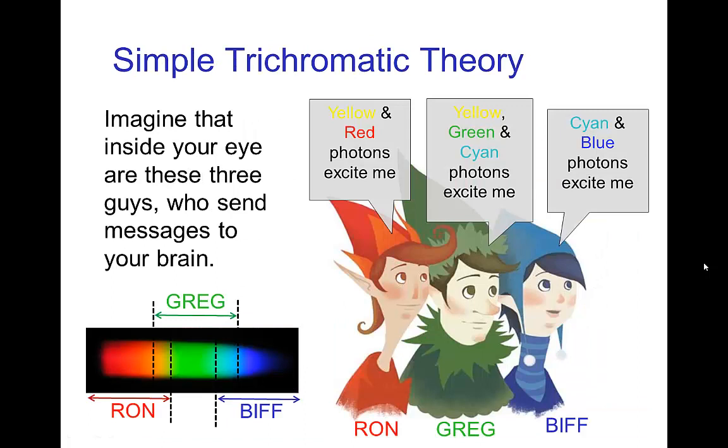Now we understand from trichromatic theory how this works that we have these three sensitive perceptors of different parts of the spectrum. And then depending on the relative excitement of Ron, Greg, and Biff, we perceive different colors from different spectrum.